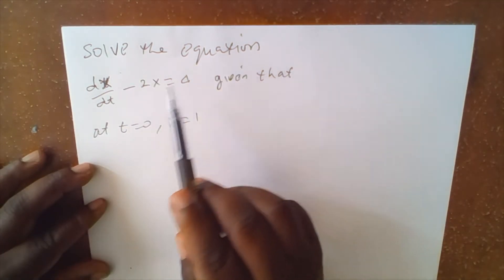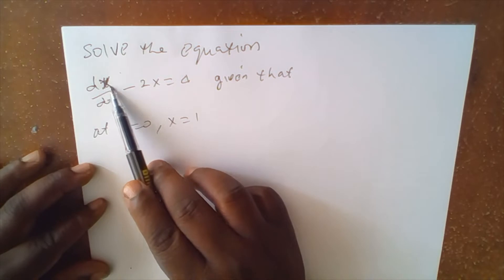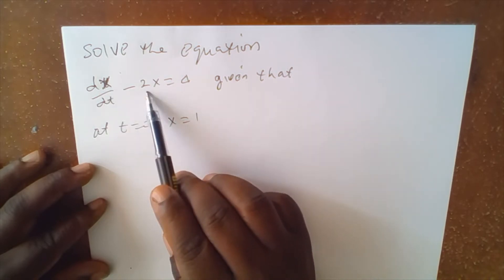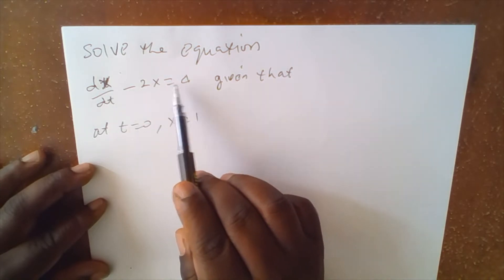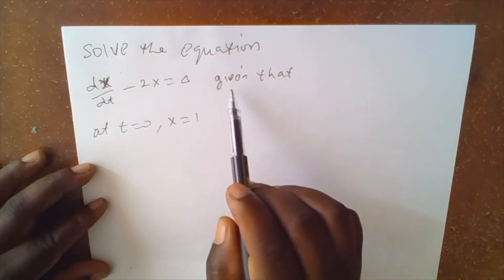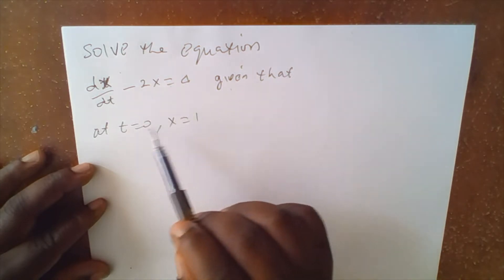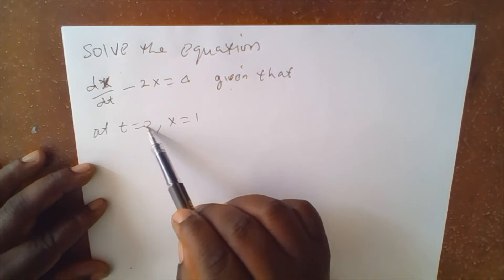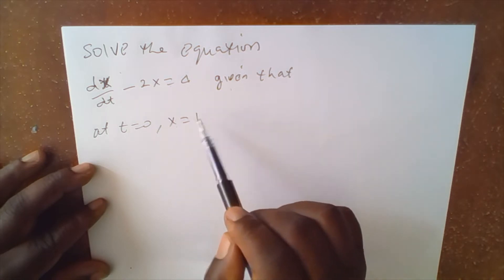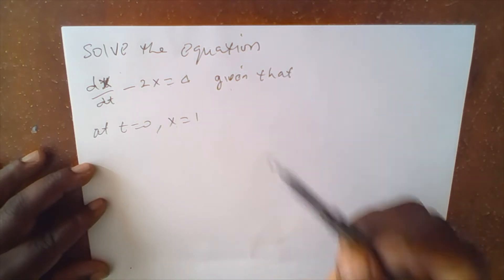Solve the equation dx/dt minus 2x equals 4, given that at t equals 0, x equals 1.